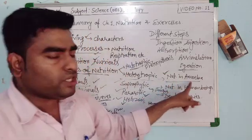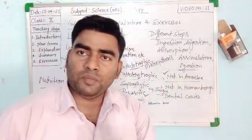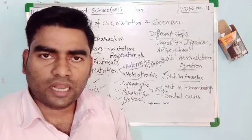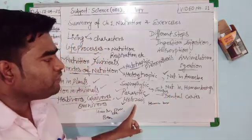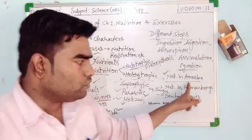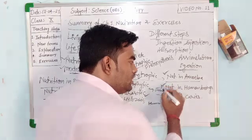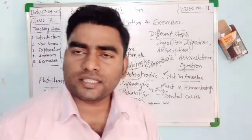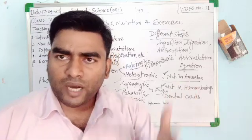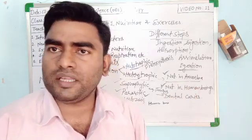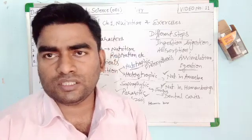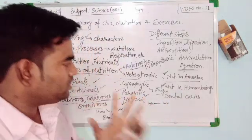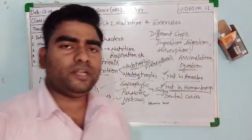We then discussed nutrition in simple animals like Amoeba and Paramecium — unicellular protozoans — along with bacteria, diatoms, and unicellular algae. They show holozoic nutrition and phagocytosis. After that, we discussed nutrition in human beings, covering the alimentary canal and digestive glands including the liver, pancreas, salivary glands, oesophagus, stomach, mouth, small intestine, and large intestine.